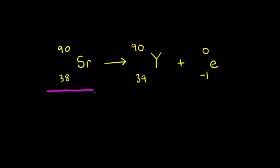Strontium-90 is a radioactive isotope that undergoes beta decay. Because radioactive decay is a first-order process, radioactive isotopes have constant half-lives. Half-life is symbolized by T½, and it's the time required for one half of a sample of a particular radioactive isotope to decay. For example, the half-life of Strontium-90 is equal to 28.8 years.